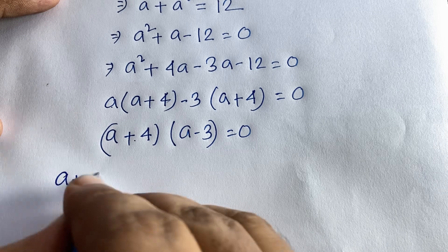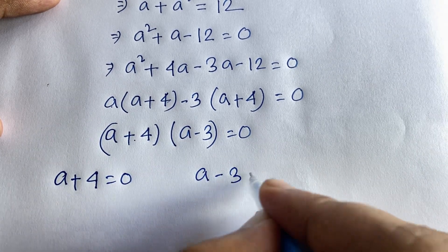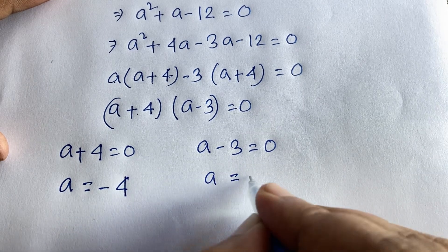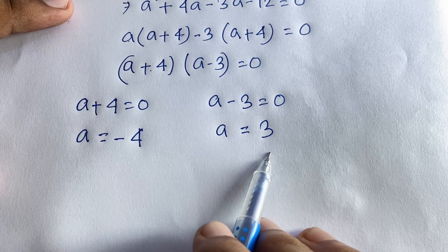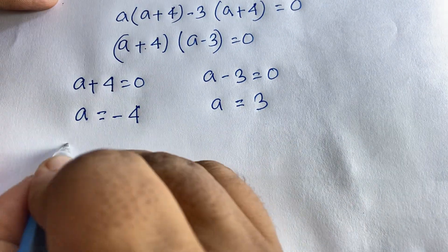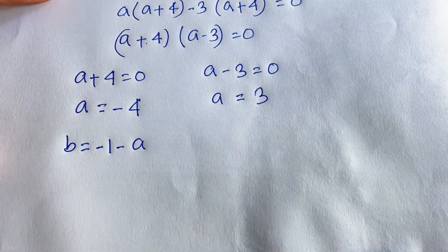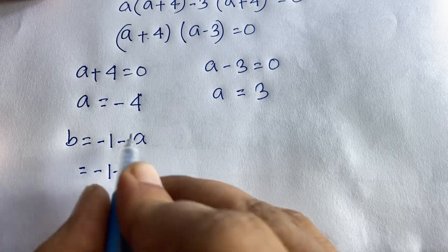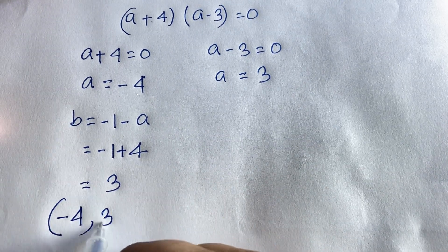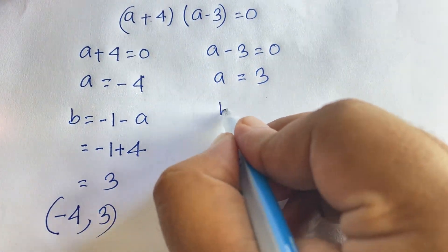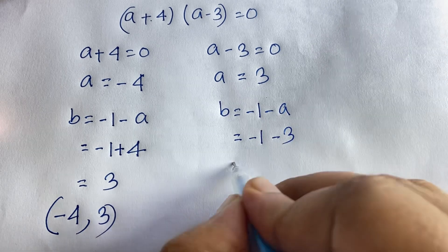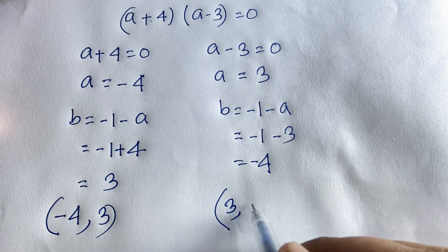From (a plus 4)(a minus 3) equals 0, we get two cases: a equals negative 4, or a equals 3. Using b equals negative 1 minus a: when a equals negative 4, b equals negative 1 minus (negative 4) equals 3. When a equals 3, b equals negative 1 minus 3 equals negative 4.